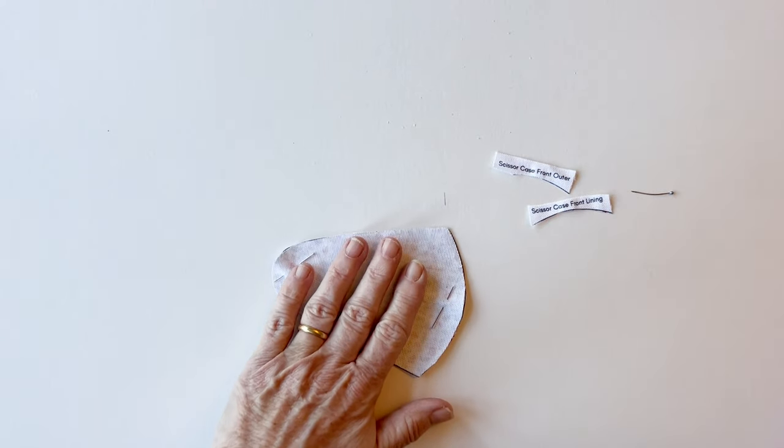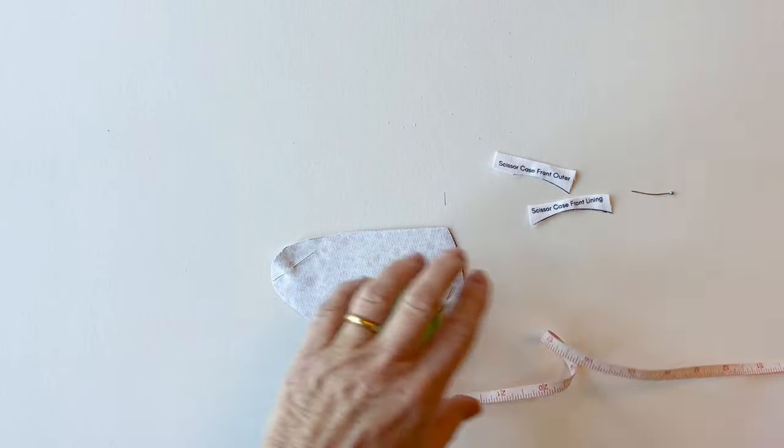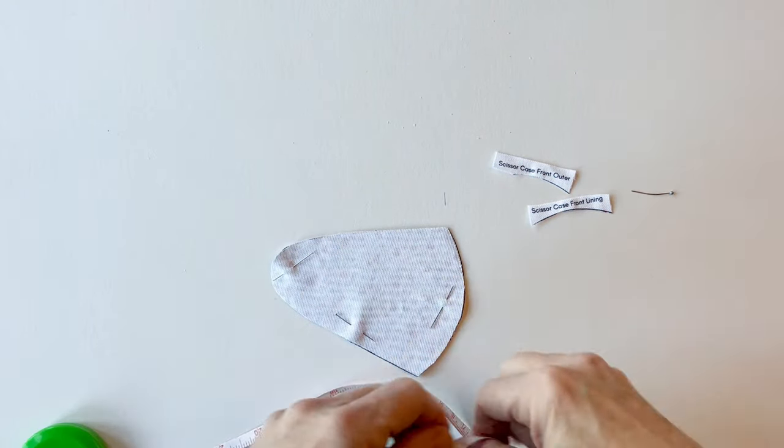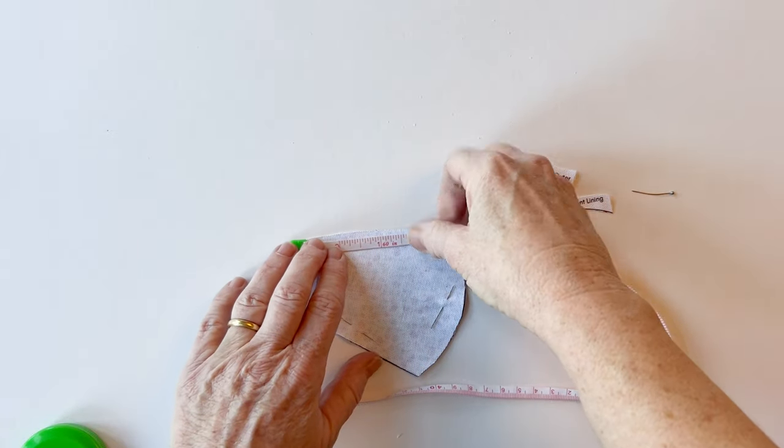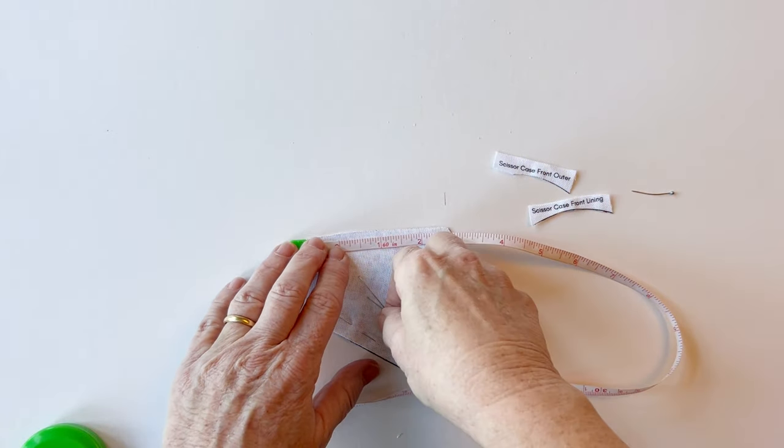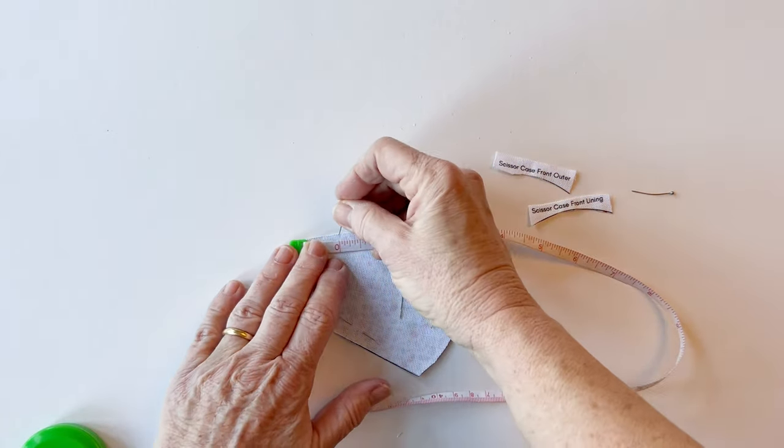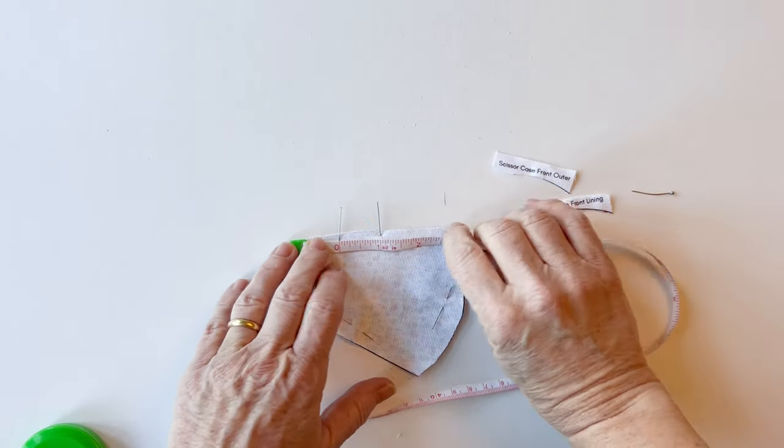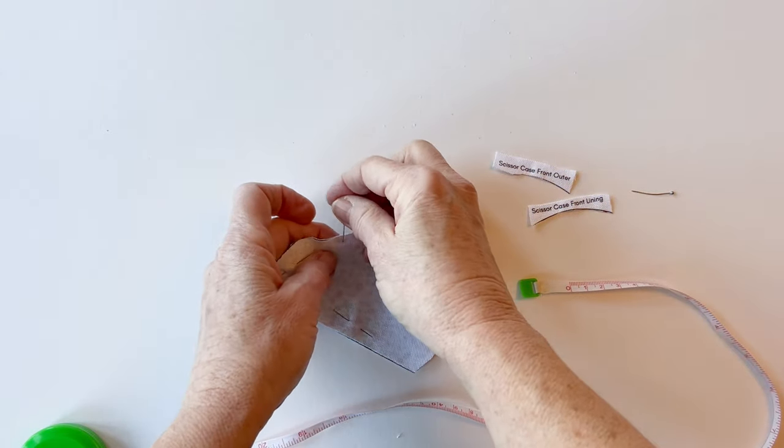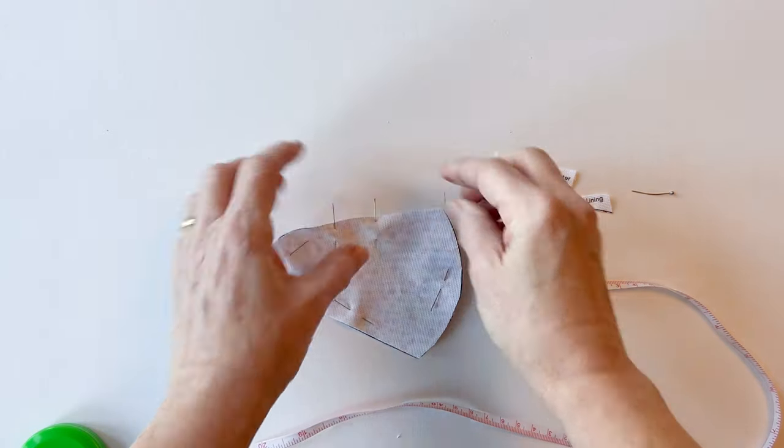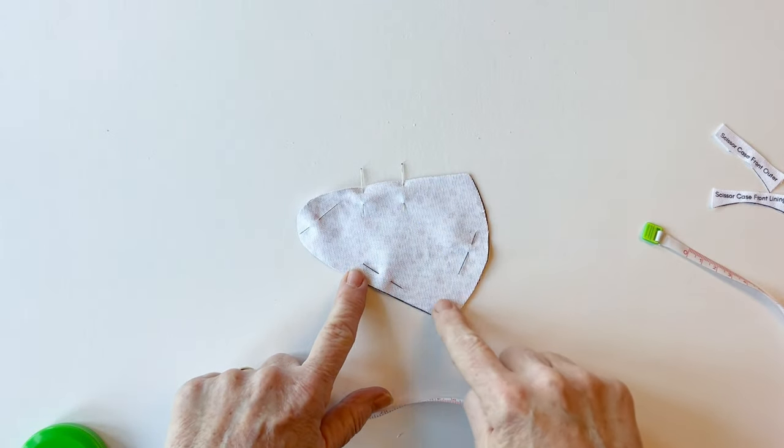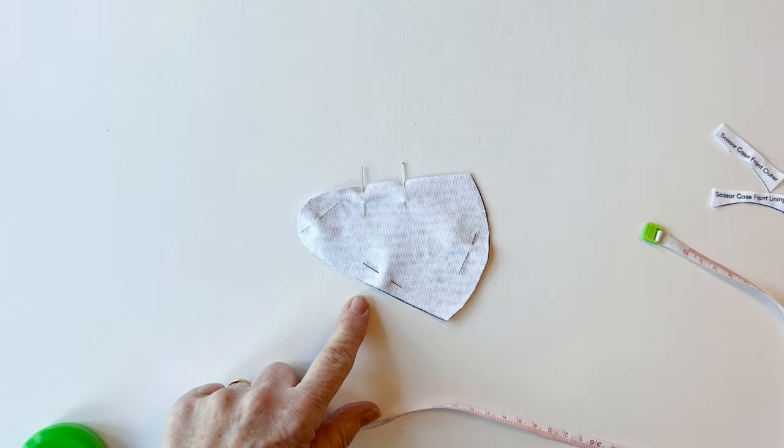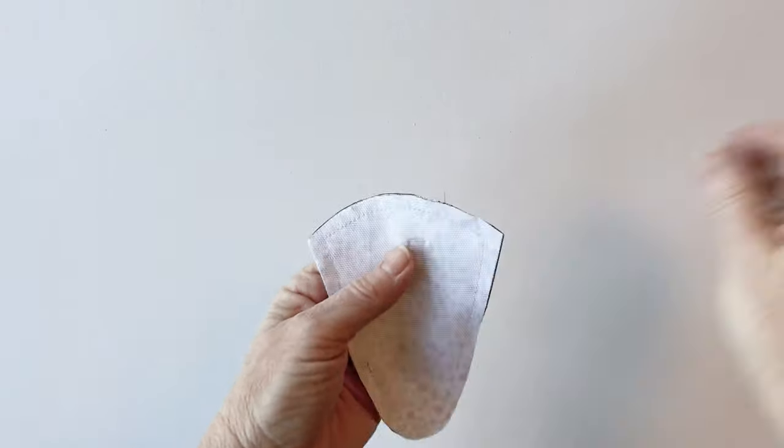Now you need to leave a turning gap in the center of one of the straight sides. Measure and mark a one inch turning gap, roughly in the center. Place vertical pins either side of this turning gap so you'll remember to leave it unstitched. Stitch together all the way around, starting and finishing either side of the turning gap.